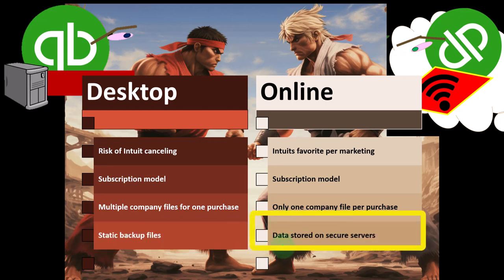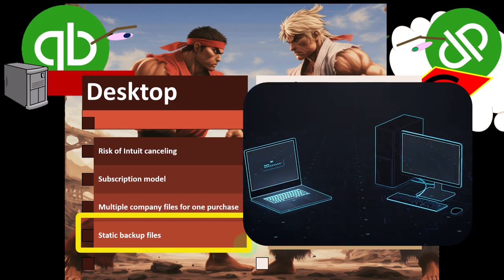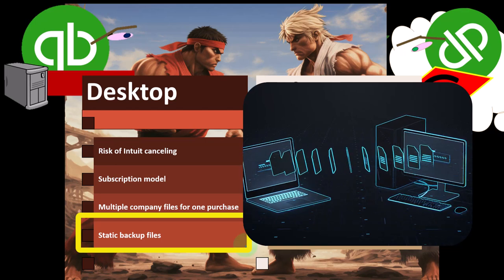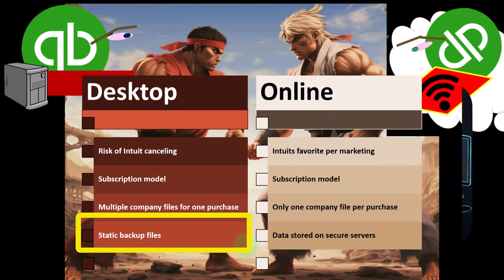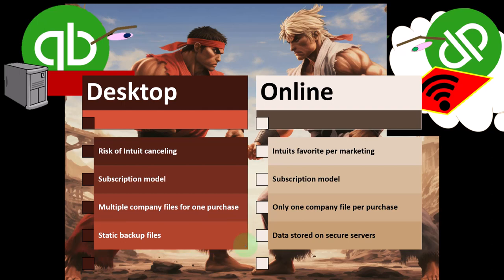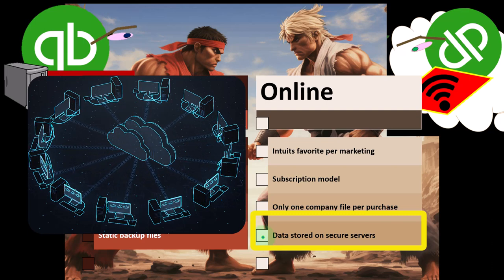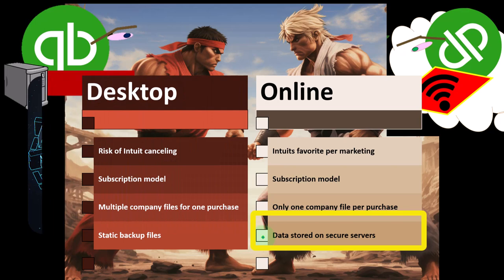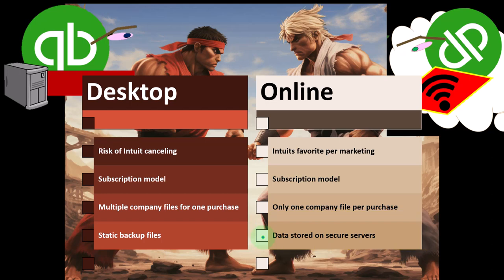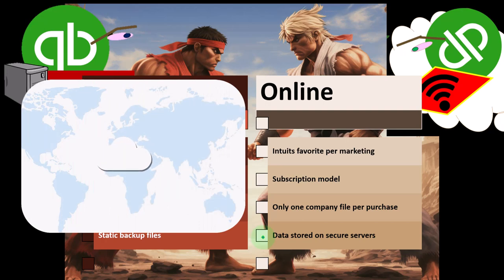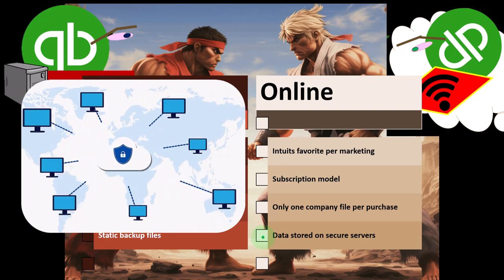Static backups versus data stored on a secure server: there are a couple of questions around backups. One is data security — what if you lose your data? QuickBooks Online's argument is that the online version is actually safer because your data is on a secure server that's double backed up with full security measures. You won't lose data if there's a fire or a hard drive crash, and they argue their backup system is better than any local backup.